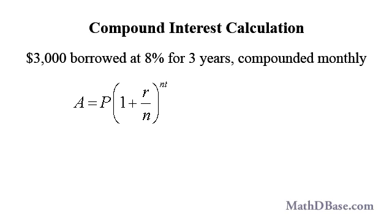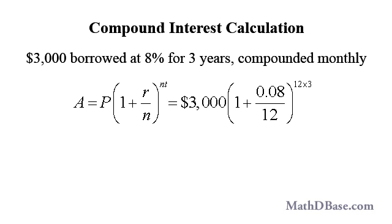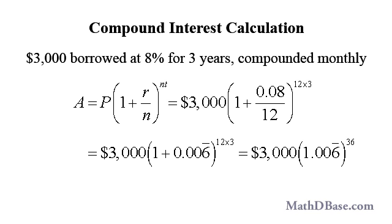Using this new formula, let's find out how much interest accrues over three years at 8% on $3,000 if the interest is compounded monthly. Putting P equals $3,000, R equals 0.08, N equals 12 since there are 12 months in a year, and T equals 3, we get $3,000 times (1 plus 0.08 over 12) to the 12 times 3, or $3,000 times 1.0067 to the 36th power, which simplifies to $3,810.71 rounded to the nearest penny. The accrued interest is $3,810.71 minus $3,000, or $810.71 — which is $31.57 more than the interest from annual compounding, and $90.71 more than the simple interest that would accrue.